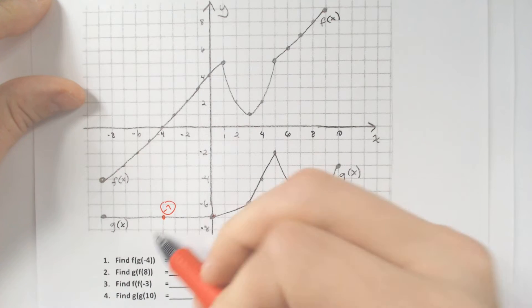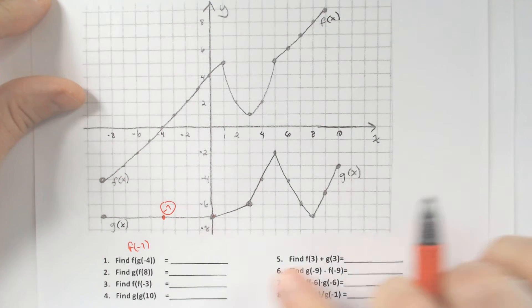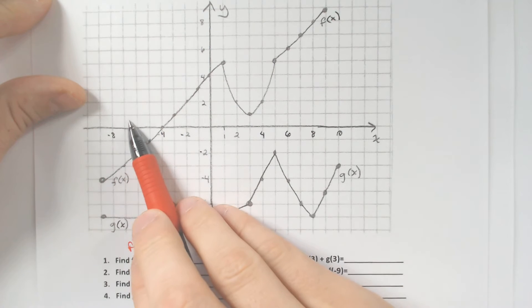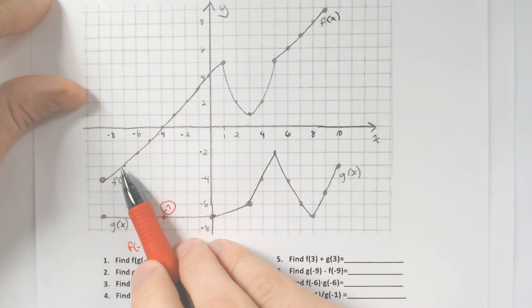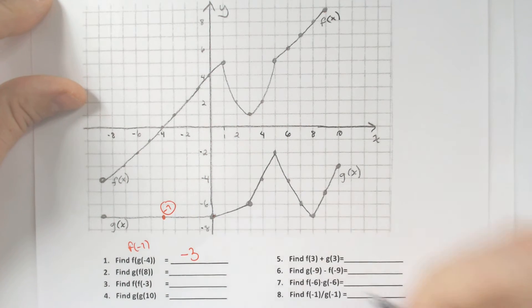Once you get the negative 7, then you're going to figure out what is f of negative 7. Well, f of negative 7, you go to negative 7 for the x values, and it spits out negative 3 on the f of x function. So our final answer would be negative 3.